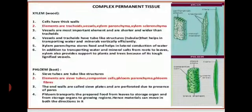Xylem cells are tubular and help in transporting water and minerals vertically and efficiently. Xylem parenchyma stores food and helps in lateral conduction of water. In addition to transporting water and mineral salts from roots to the leaves, xylem also provides support to the plant and trees because of its tough lignified vessels.